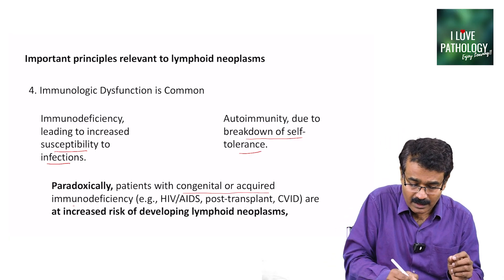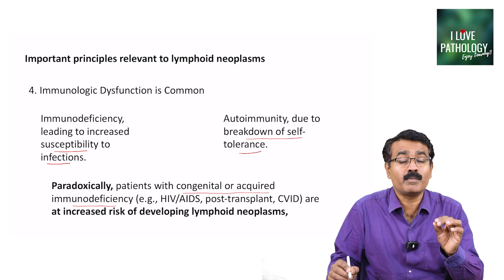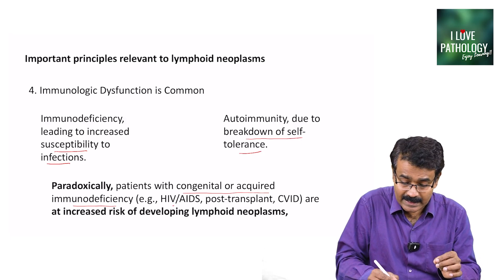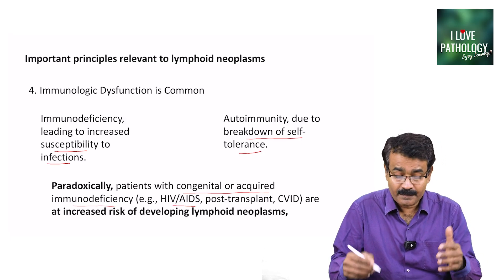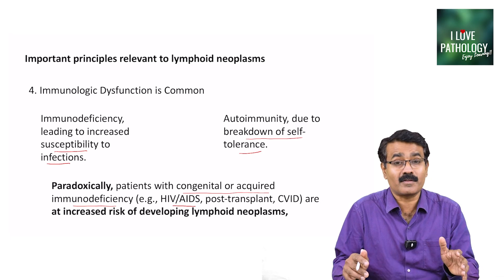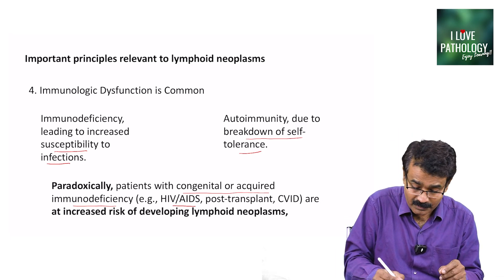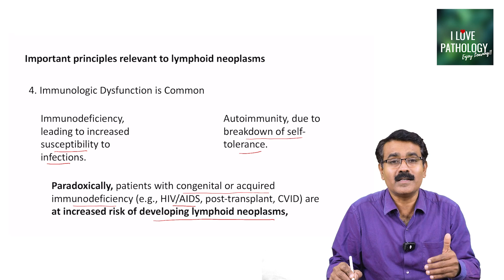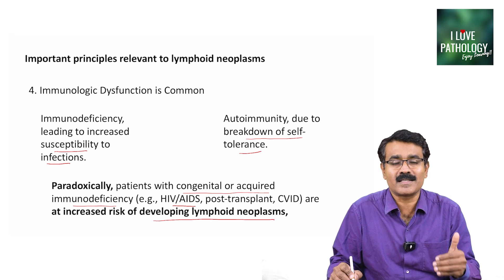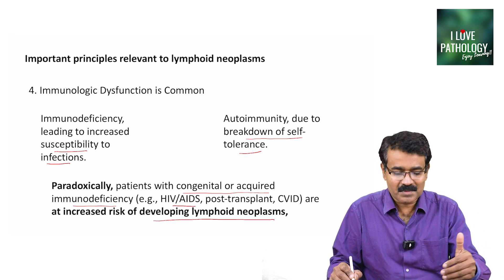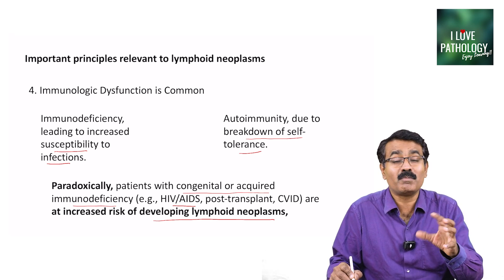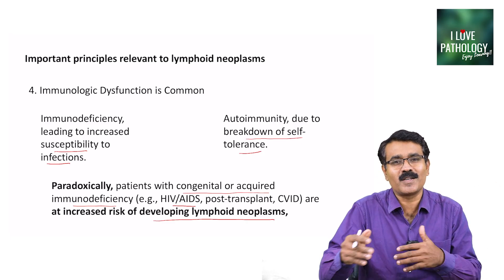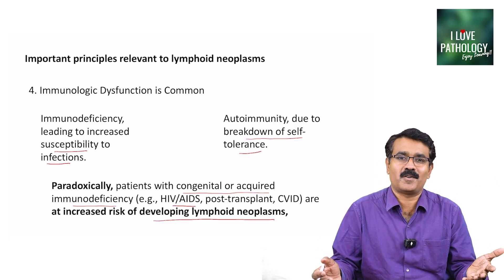Paradoxically, patients with congenital or acquired immunodeficiency — for example HIV, AIDS, or post-transplant diseases — are at risk for development of lymphoid neoplasms. That is the paradox: lymphoid neoplasms cause immunologic dysfunction, but on the other hand, immunologic dysfunction states can also lead to development of lymphoid neoplasms.